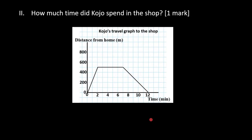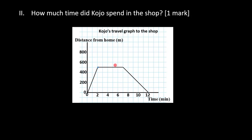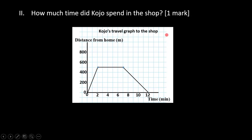Let's move to the second question: how much time did Kojo spend in the shop? This was his first stop, which must have been his arrival at the shop. When reading travel graphs, a horizontal portion of the graph simply represents a state of rest on a distance-time graph. From this first point to the second point represents the duration he must have rested.